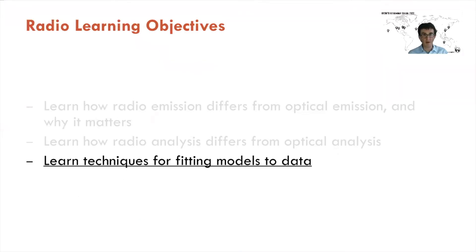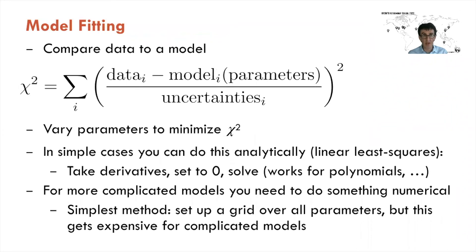What we'll spend most of our time on today is learning techniques for fitting models to data. This is fairly agnostic of being radio data — it works for optical, X-ray, or many non-astronomical situations. The basis of model fitting is comparing data to a model using chi-squared. For every observation i, we take the data, subtract the model, divide by the uncertainties, square that so it's always positive, and sum over all observations. As we change the parameters, we get a smaller chi-squared, and the minimum chi-squared is the best fit.